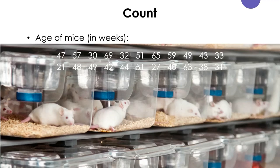So how many age data do we have here? We count them up and find we have two rows of 11, so the total number of data is 22. When we report the number of data, we typically use a small n for number — so n equals 22. That is our number of observations. By the way, what do you think is the level of measurement for the age data? What is the level of measurement for the variable 'age of mice'? I'll let you figure that out.